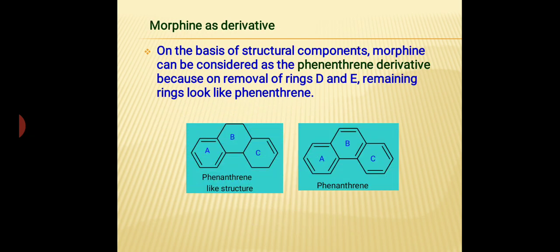Considering morphine as a derivative: if we take the structure of morphine and remove rings D and E from the structure, we get a structure that has similarity with phenanthrene. It means, on the basis of this structural similarity, morphine can also be considered as a phenanthrene derivative.